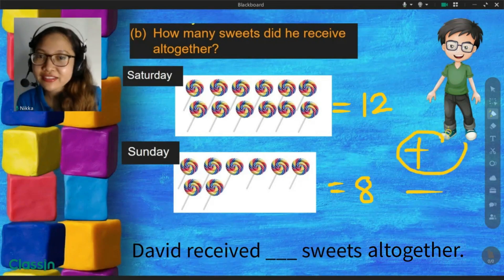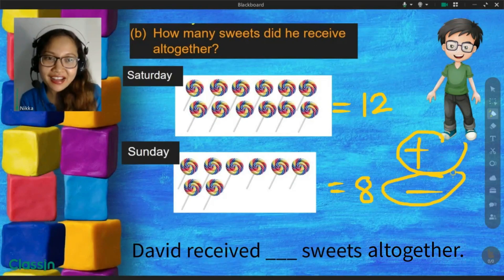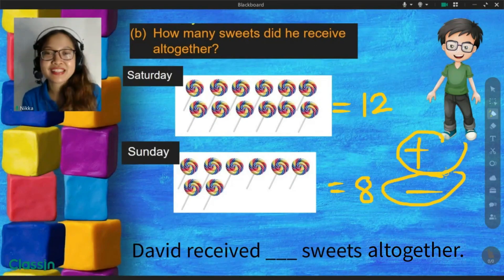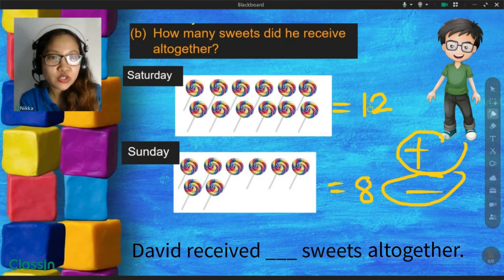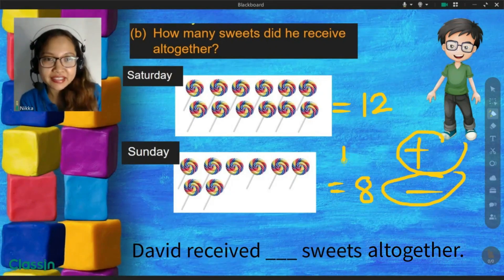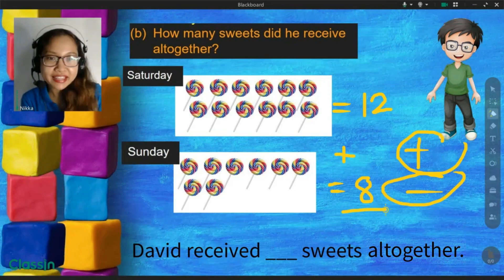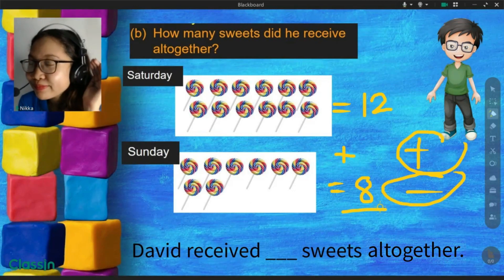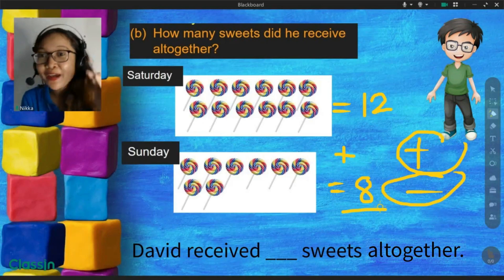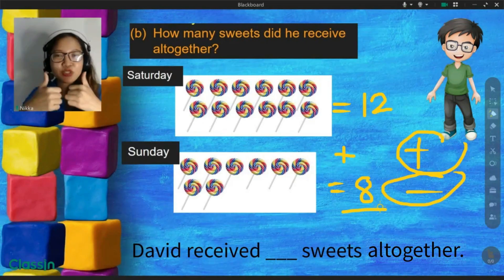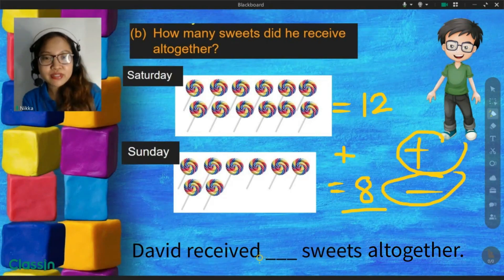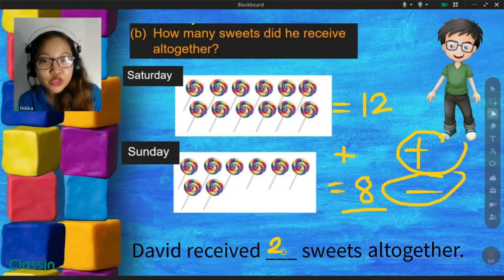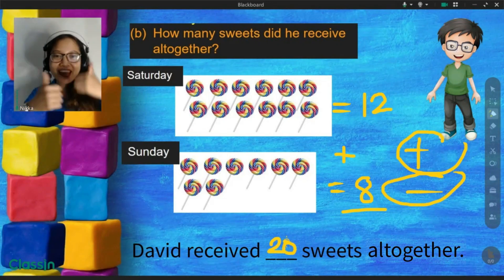Is it add? Is it subtract? That is add. Great! We're going to add 12 and 8. And 12 plus 8 is equal to? Very good! That is 20. So, the answer here, in letter B, David received 20 sweets all together. Great!